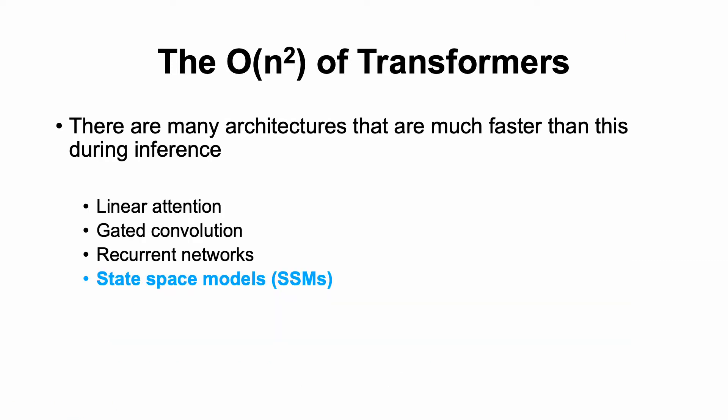To address this, there have been many architectures that have been developed that are much faster than this quadratic efficiency during inference. For example, we have linear attention, gated convolution, recurrent networks, and in this talk state-space models or SSMs.